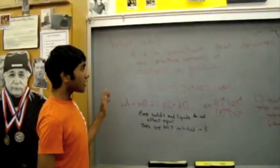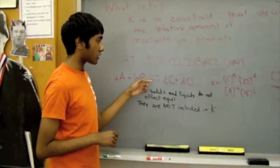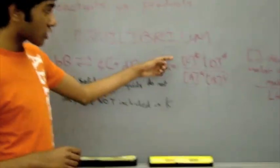An equilibrium system can be mathematically described by a constant called k. In this reaction, k is equal to this expression.